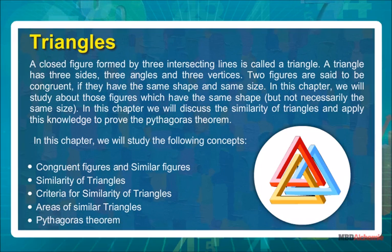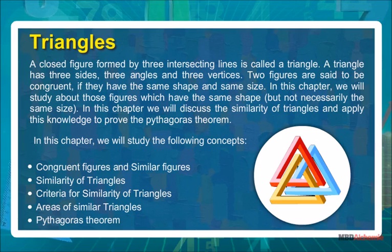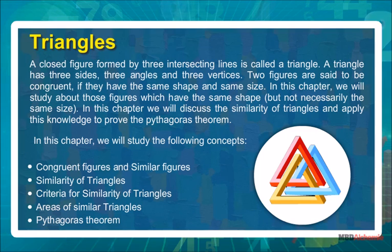A closed figure formed by three intersecting lines is called a triangle. A triangle has three sides, three angles and three vertices.